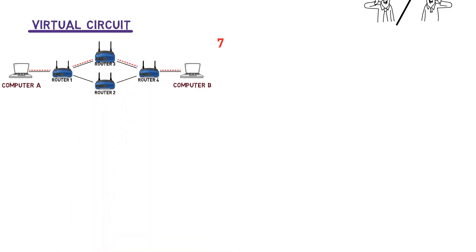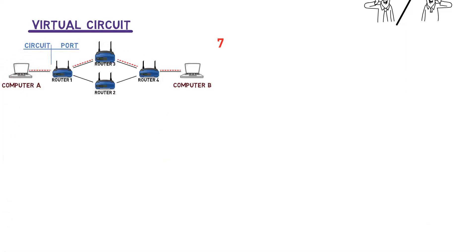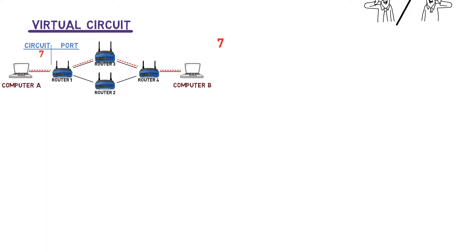For virtual circuits to work, we need a couple of things. First, the routers need to store a table telling them which circuit identifier goes to which router or port. So in our example, router 1 stores that if it receives a message belonging to circuit 7, it forwards it to router 3. Router 3 has an entry saying messages belonging to circuit 7 need to be forwarded to router 4. Of course, router 3 doesn't know it's router 4 — rather it knows which port the packet should be forwarded to. Multiple circuits may coexist, so the routers will store additional entries.